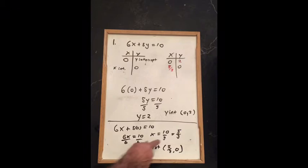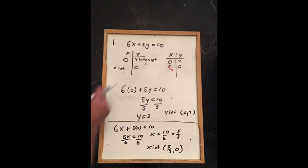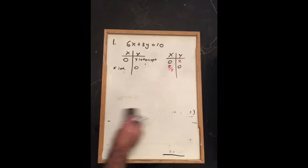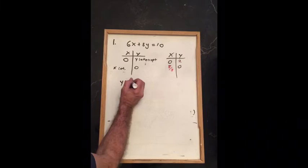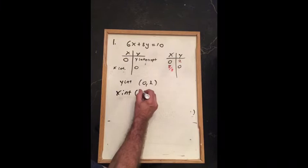This should be a 6 right here — let me fix that. It should be a 6, and then we just reduce it down to 5 thirds. So these are the x and y intercepts, and you should list them as points. The y-intercept is (0, 2) and the x-intercept is (5/3, 0).